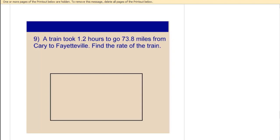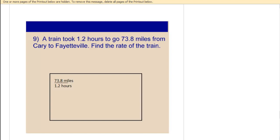In order to find miles per hour, let's set up 73.8 miles over 1.2 hours as a ratio or fraction. Because what we want to figure out is how many miles in one hour. That would be the rate.